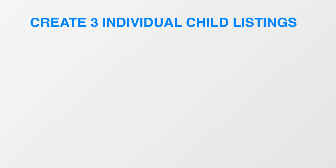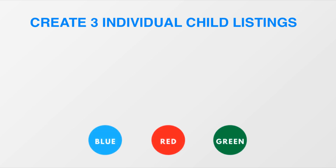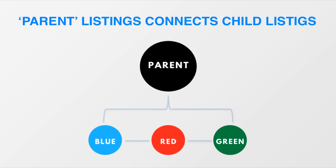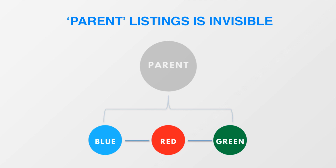So how do you actually go about creating variation listings in Amazon Seller Central? The first thing you're going to want to do is create three individual child listings, as you would if they were not variation listings. Once you've created those three child listings, you're going to want to create a fourth parent listing. This parent listing will connect the child listings together, and it's not visible to customers — it's essentially just an invisible listing whose sole purpose is to connect the three child listings into one variation listing. The only place you'll be able to see this parent listing once it's created is in your backend in Seller Central.